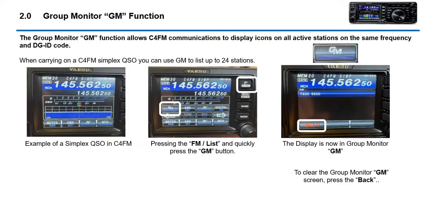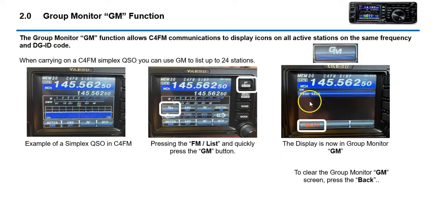First we're going to go ahead and do the Group Monitor function. The Group Monitor function allows you to display icons of active stations on the same frequency and digital ID code. To access this, you simply press the FM List and then press Group Monitor quickly, and this will bring up the screen where you can see any stations in that chat room. Click Back to clear the screen.